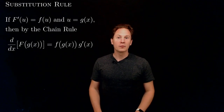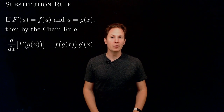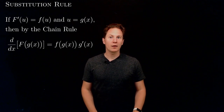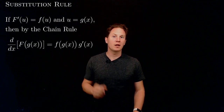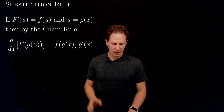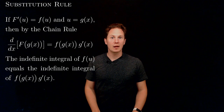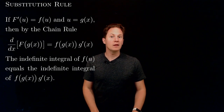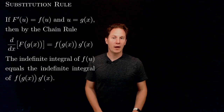If the derivative of F with respect to u is f(u), and u equals g(x), then by the chain rule the derivative with respect to x of F(g(x)) is f(g(x)) times the derivative of g at x. So what this is saying is that the indefinite integral of f(u), which is F(u), is the same as the indefinite integral of f(g(x)) times g′(x), which is F(g(x)).